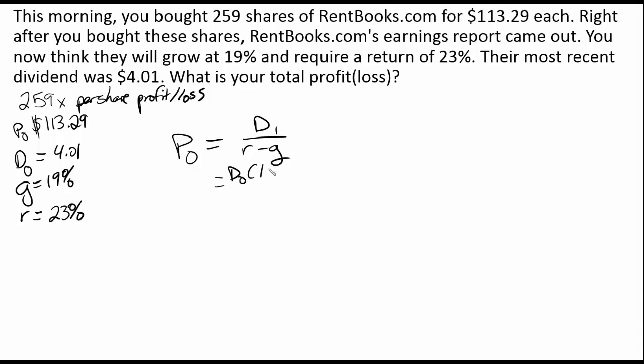Remember, we can transform this by using D0. We have the $4.01, and remember, if we are given D0, that's today's dividend — time period zero is right now. If it's taken in period one, that's in one year, one day, one month — however we define it. We're going to be assuming yearly dividends, but they can be quarterly, semiannual, etc.